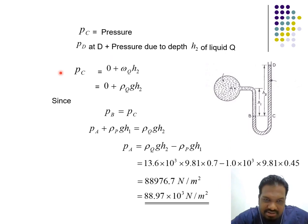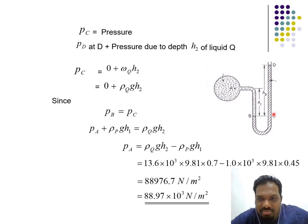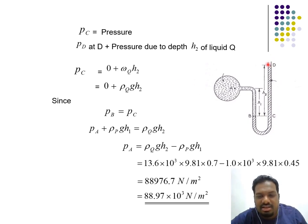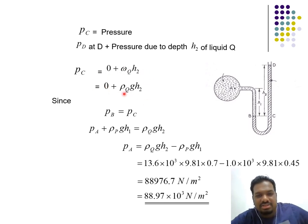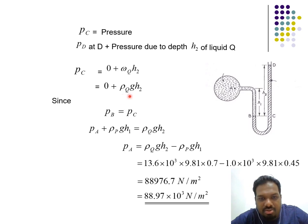Since PB equals PC, we equate the two sides: PA plus rho_P·g·H1 equals rho_Q·g·H2. From this equation, you can find pressure at A by substituting and solving for the known values.